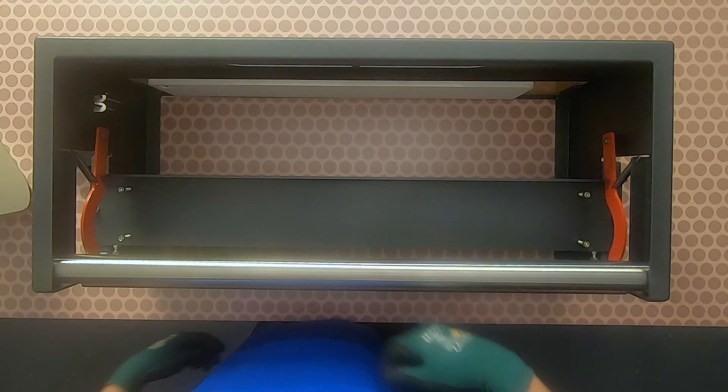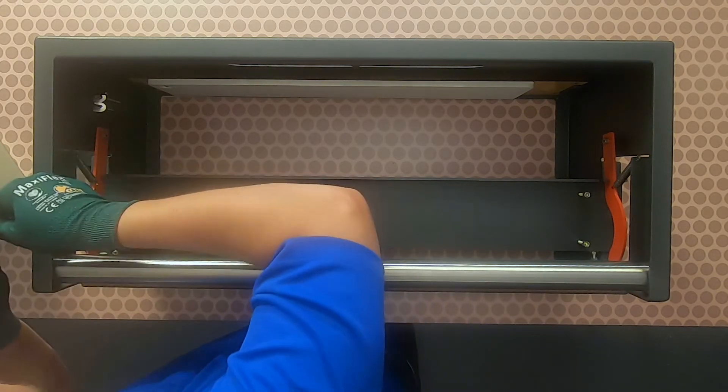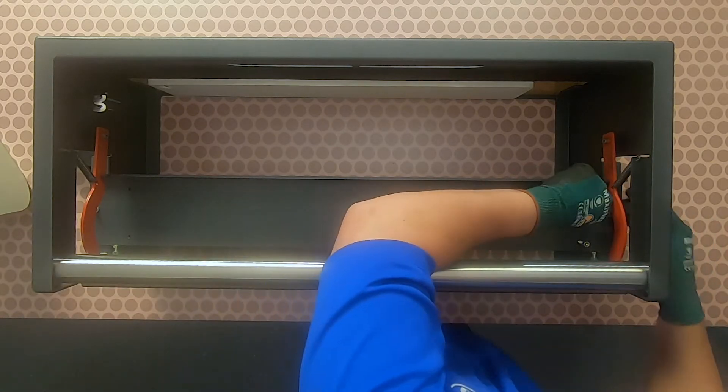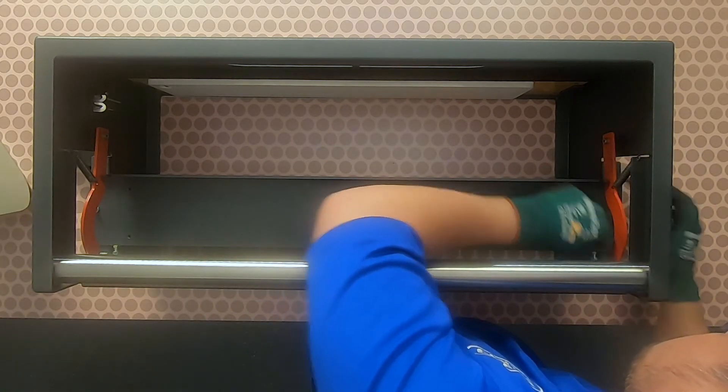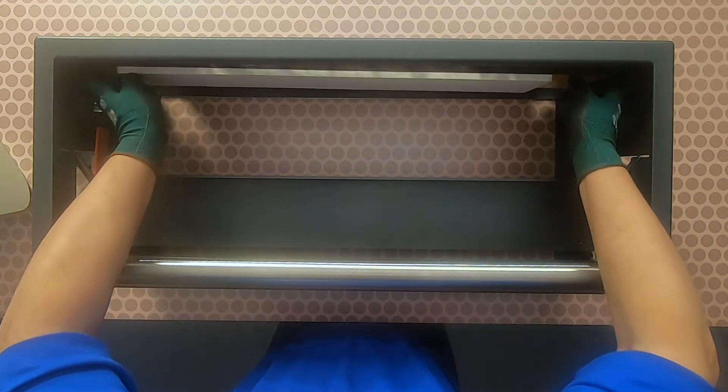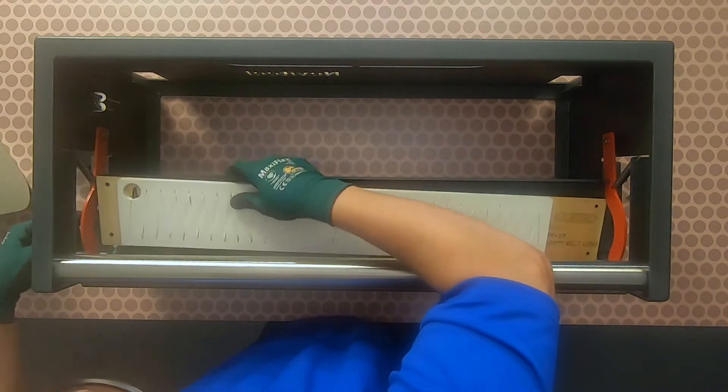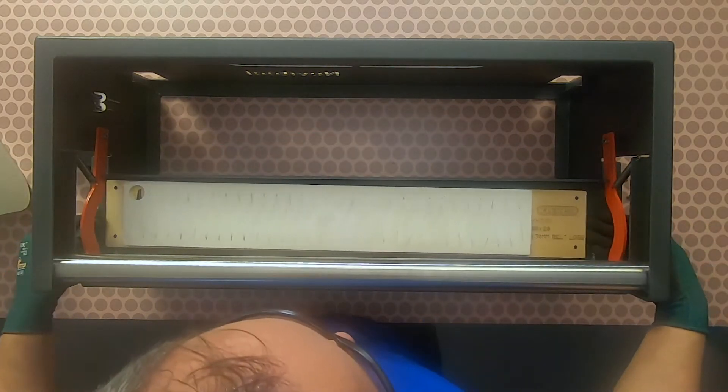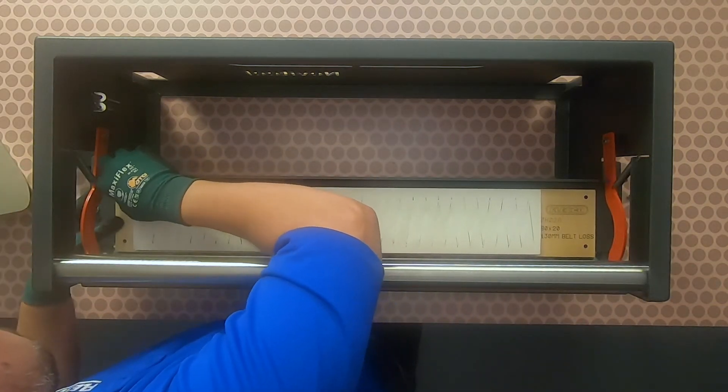Next, change out the punch board to the desired finger geometry by unscrewing the four hex bolts. Because we positioned the punch block in the vertical position, we can install a punch board with longer fingers. At the rear of the punch frame, there are tabs to store a punch board. The punch board gets secured to the punch board tray with the four hex bolts.